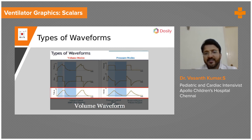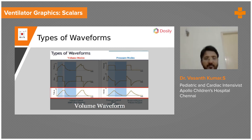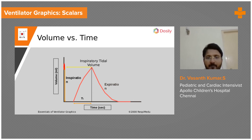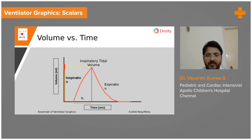Next is the easiest waveform — the volume waveform. Whichever looks like a mountain is called the volume-time scalar. This is the inspiratory time, this is the expiratory time, and you can see the volume here. From this scalar you can get the amount of tidal volume which has been delivered.